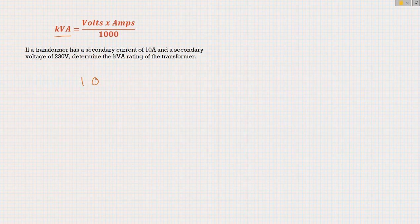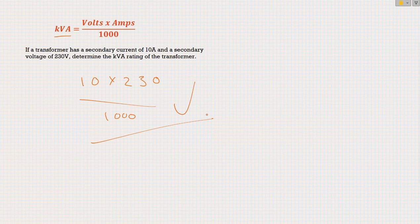So we're looking at 10 multiplied by 230, divide that by 1,000, and that's going to give us our kilovolt amp rating of our transformer. So stick those values in. I'm not going to do it on this video just to save some time and keep it short, but that's nice and simple.